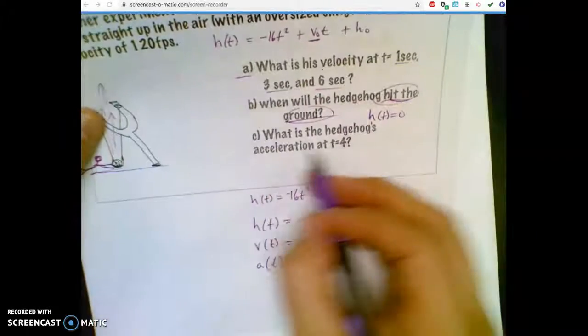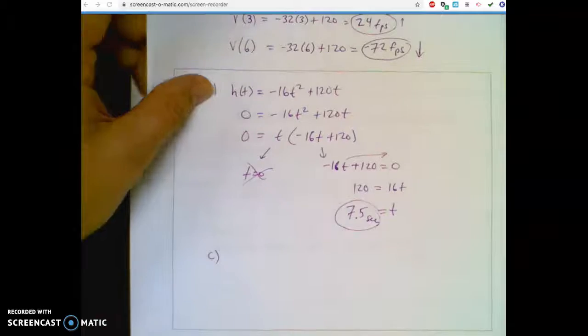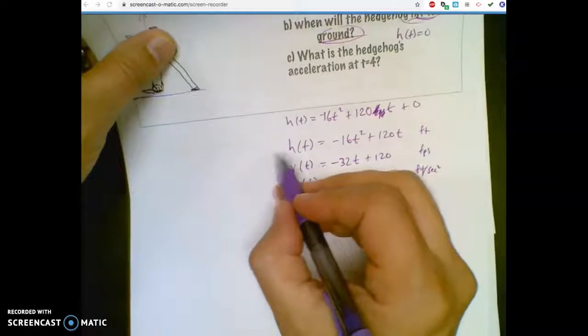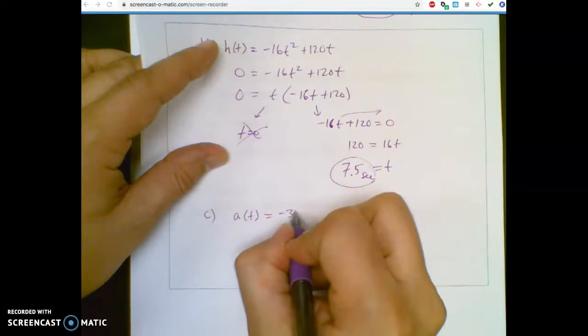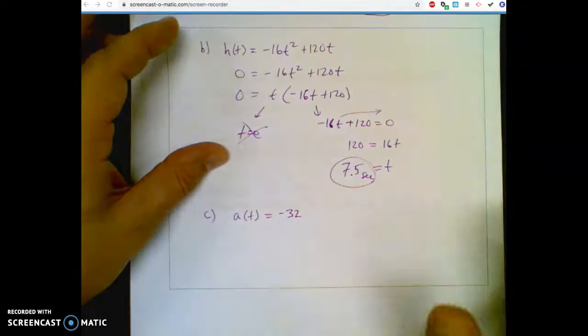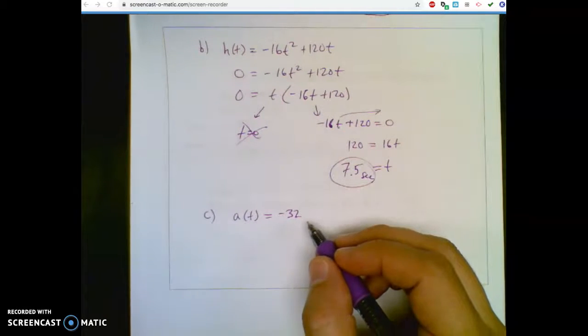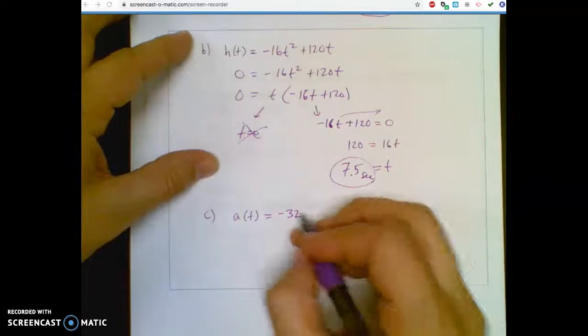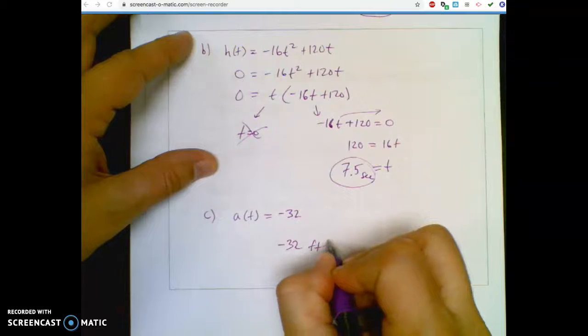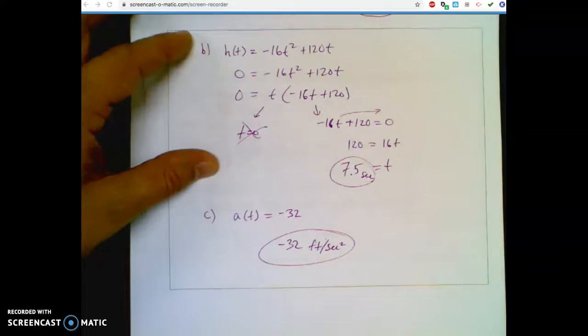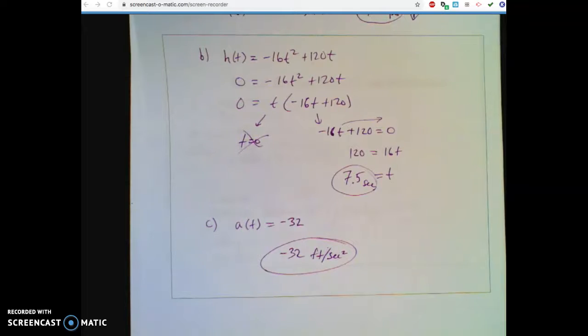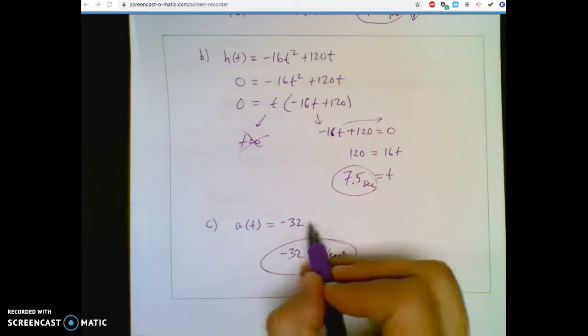Alright, so part C, what is the hedgehog's acceleration at t equals 4? So when 4 seconds happen, when we're 4 seconds into the flight, what's its acceleration? Well, now I'm not using that, I'm not using that, I'm going to use this equation, which is simply a of t equals negative 32. It doesn't matter if they said 4 seconds, at 1 second, at 20 seconds. It doesn't matter because acceleration is always the same, and that's because gravity is constantly pulling down.